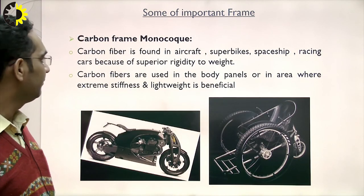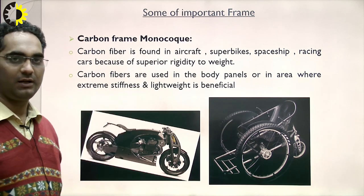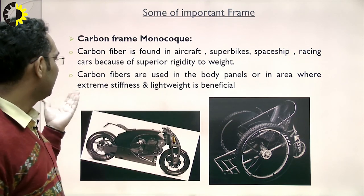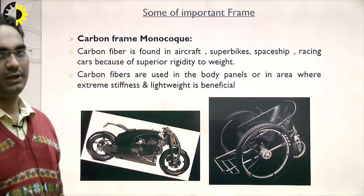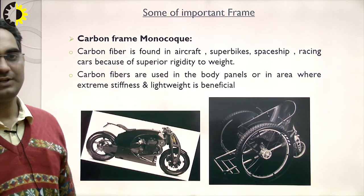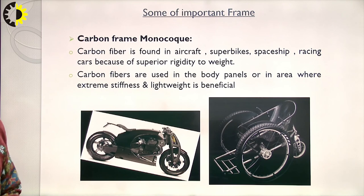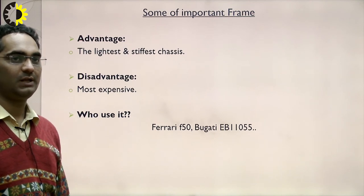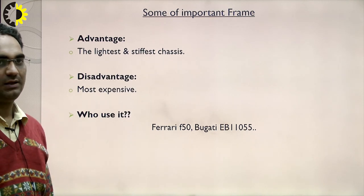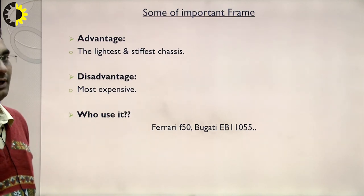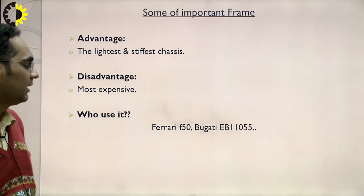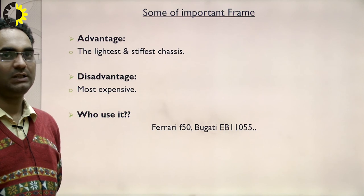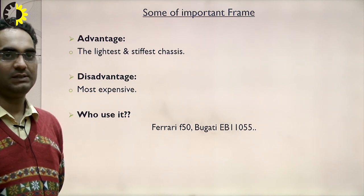Carbon fiber monocoque is found in aircraft, superbikes, spaceships, and racing cars due to superior rigidity-to-weight ratio. Carbon fibers are used in body panels or areas where extreme stiffness and light weight are beneficial. These are the lightest and simplest chassis. Disadvantage: most expensive. Users include Ferrari F50 and Bugatti EB110.